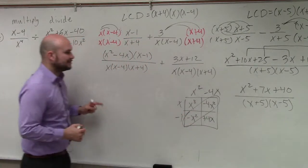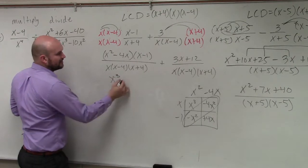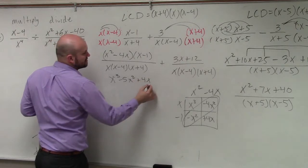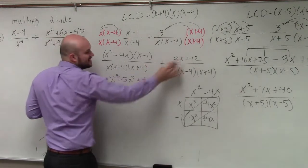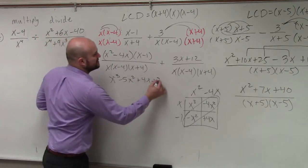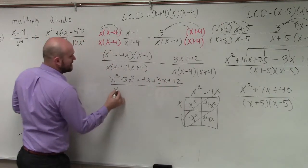So let's combine my like terms. And what I have is x cubed minus 5x squared plus 4x. And then basically I can just add these. So I can add 4x, let's do plus 3x plus 12, all over my common denominator.